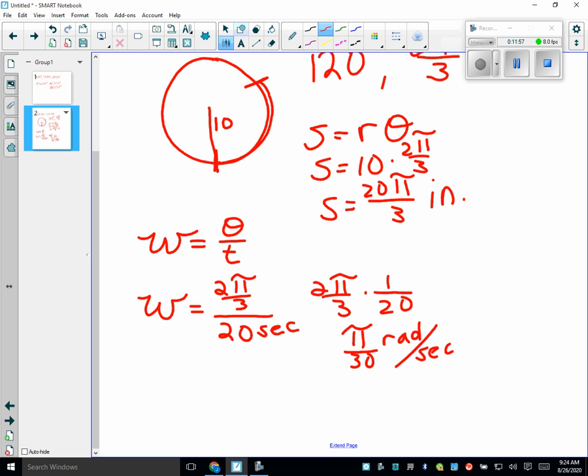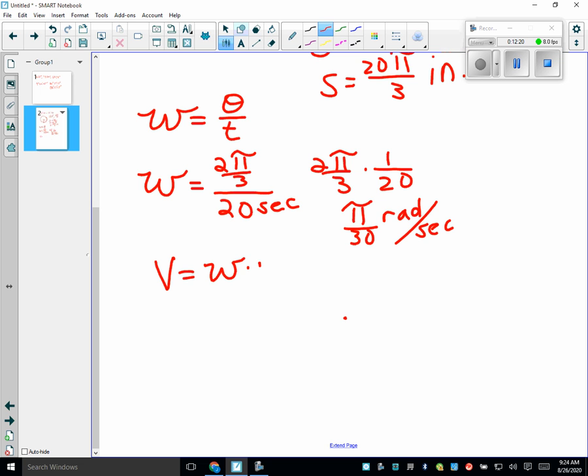What would be the linear speed? V equals ω times r, which would be π over 30 times 10. Which is π over 3 inches per second. How was that? Did you remember some of this? Is it starting to kind of, oh yeah, I know that, where it's not all new?